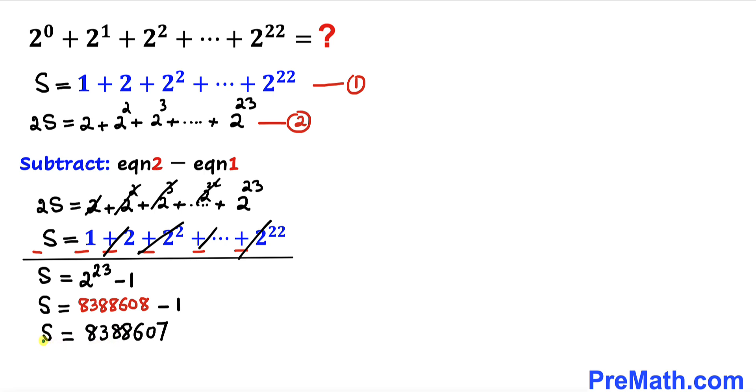So thus our sum S turns out to be 8,388,607. And we can see that S represents the sum of our original series.